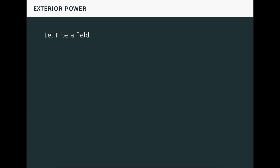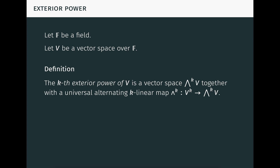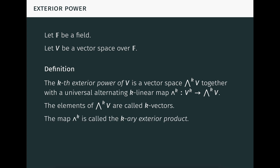So let f be an arbitrary field, and let v be an arbitrary vector space over f. We don't assume that v is finite-dimensional in general. We also don't assume that v has a norm or an inner product. All the properties we're studying in this video are affine properties, not metric properties. The k-th exterior power of v is a vector space, denoted wedge k v, together with a universal alternating k-linear map, also denoted with a wedge, from v into wedge k v. The elements of wedge k v are called k-vectors. The map is called the k-area exterior product. In the base cases, we take wedge 0 v to be the scalar field f, and we take wedge 1 v to be v itself. In the general case, the k-th exterior power can be constructed in several ways, but the result is unique up to isomorphism. We won't bother constructing it in this video. It's important to note that the construction is totally algebraic, and doesn't depend upon any of the informal geometric concepts that we used for motivation earlier.